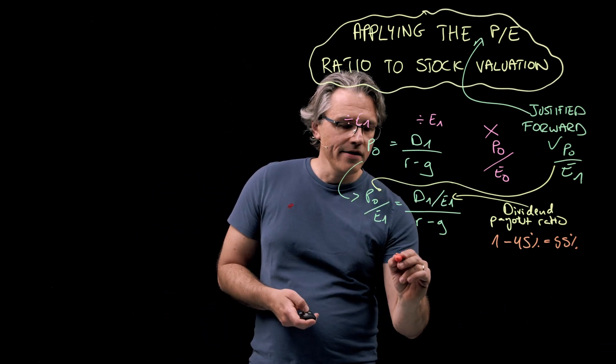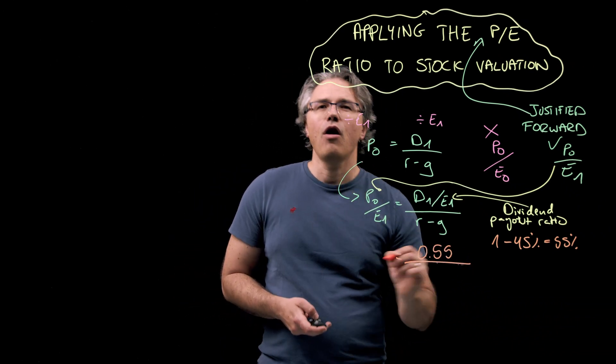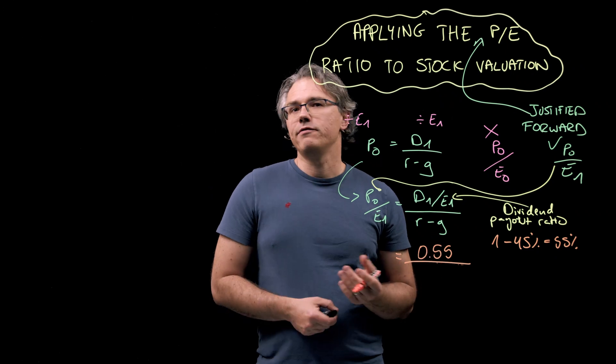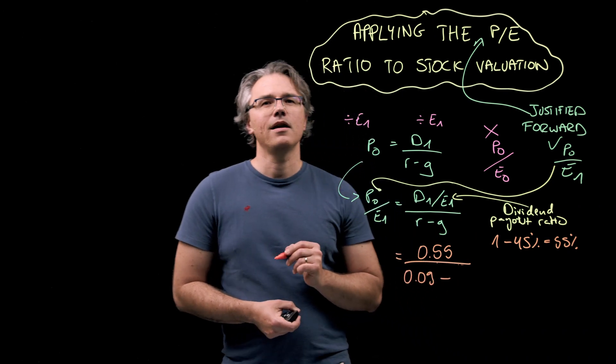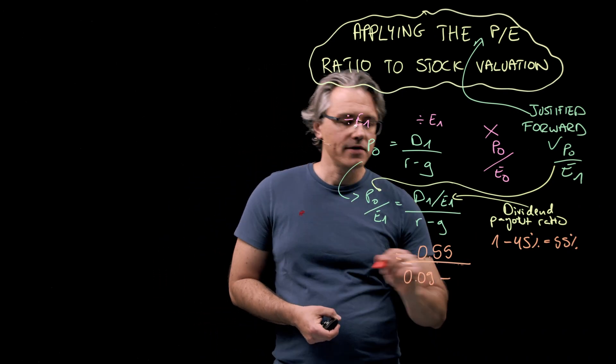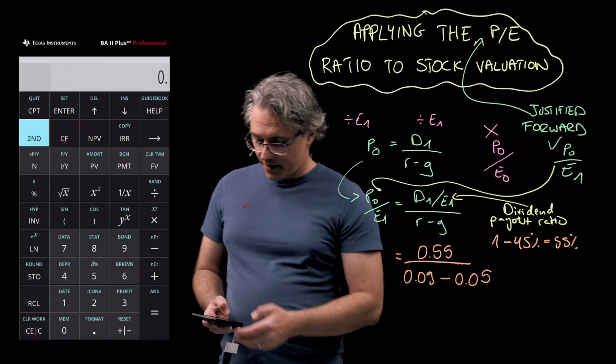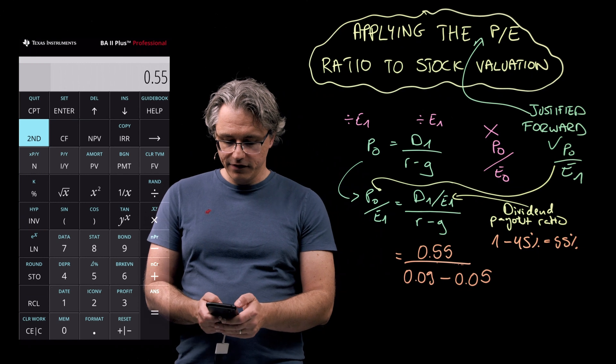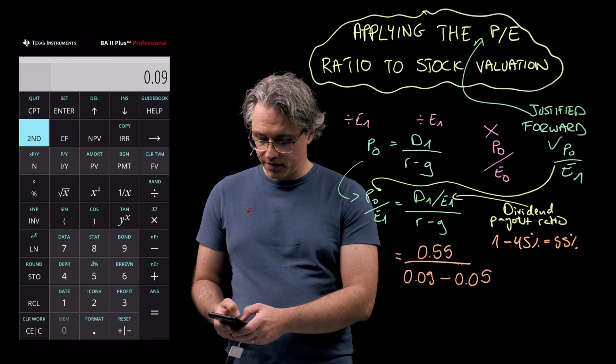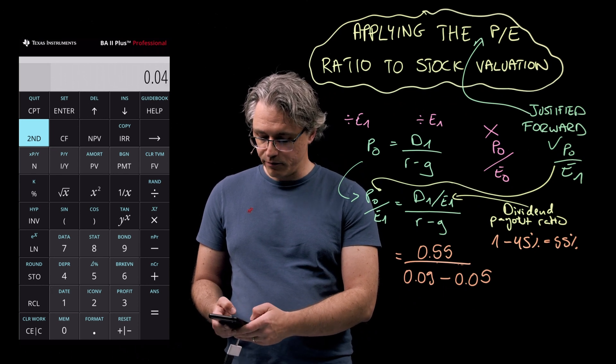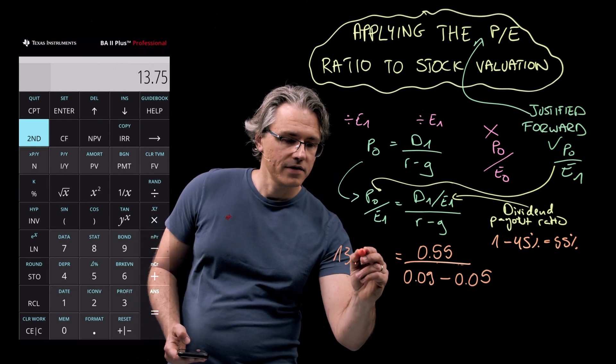So we end up with 0.55 over a required rate of return equal to 9% minus a growth rate of 5%. Let's quickly do this on the calculator. 0.55 divided by open bracket 0.09 minus 0.05 close bracket equals 13.75,